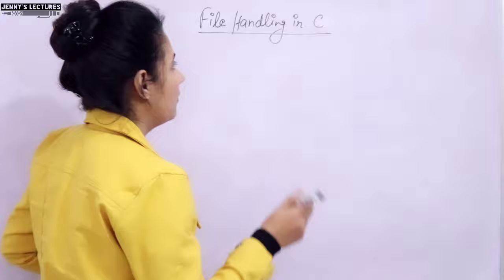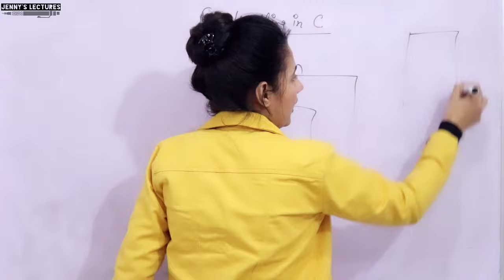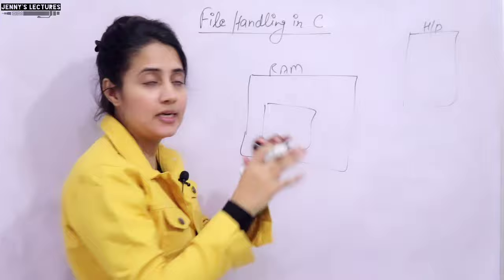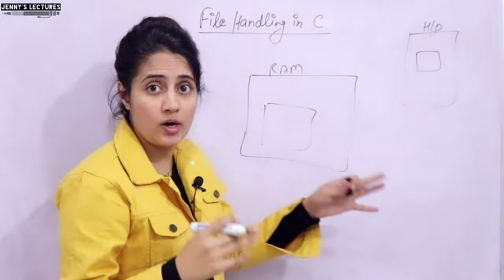In the previous video, we discussed that whenever you execute your program, it gets loaded into RAM — some memory is given to that program in main memory — and this is the hard disk. RAM is volatile memory; hard disk is non-volatile memory. If you want to permanently store the input data and output you are processing, you can store it on the hard disk using a file. A file is nothing but memory blocks, or a sequence of bytes, where you can store data permanently on the hard disk.